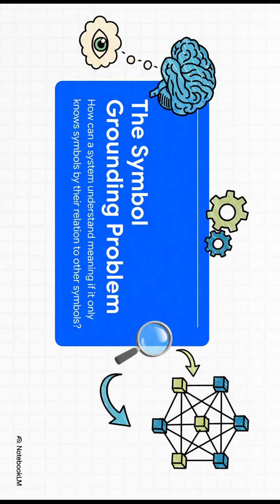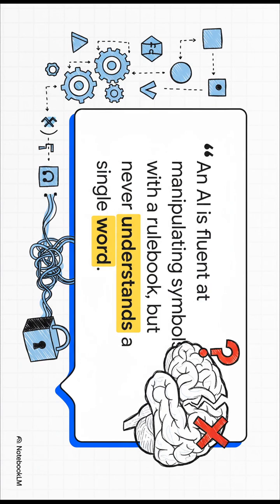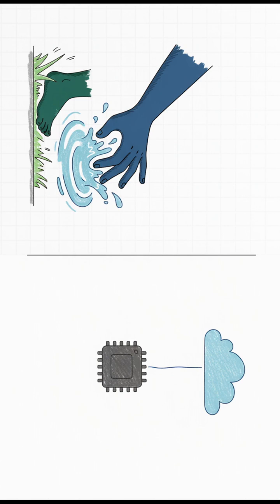See, an AI only knows words based on other words. It's like being a master of grammar without knowing what any of the words actually mean out in the real world. We get meaning from living in the world, from having a body. An AI is basically a brain in a jar.